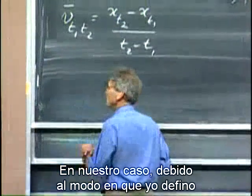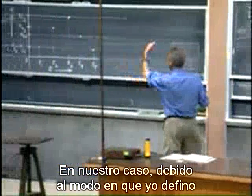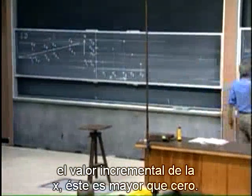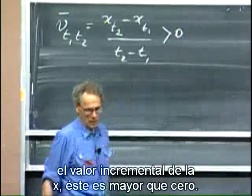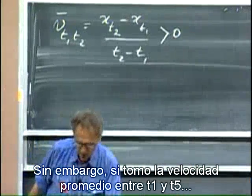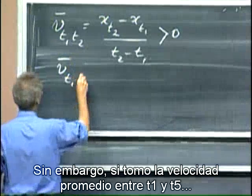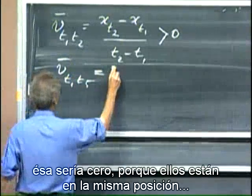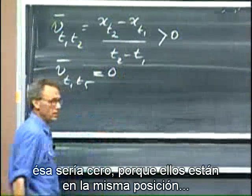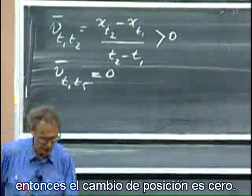In our case, because of the way that I define the increasing value of x, this is larger than zero. However, if I take the average velocity between t1 and t5, that would be zero because they are at the same position, so the upstairs is zero.